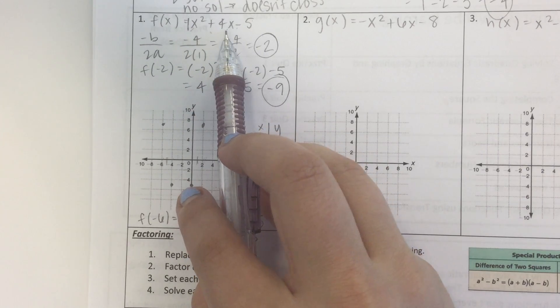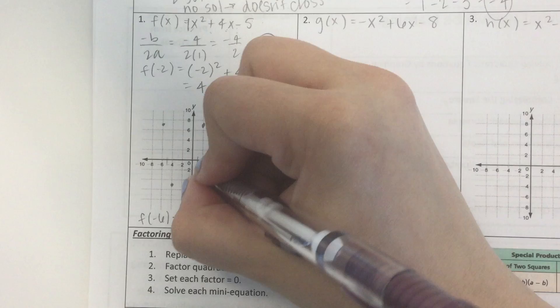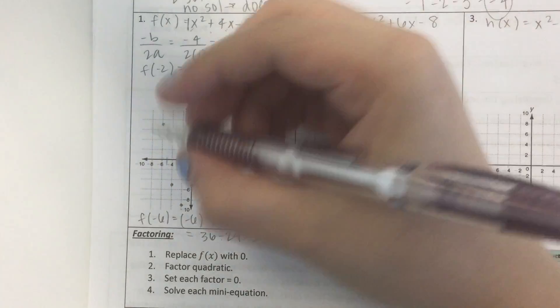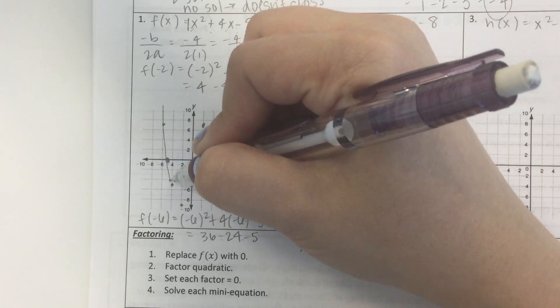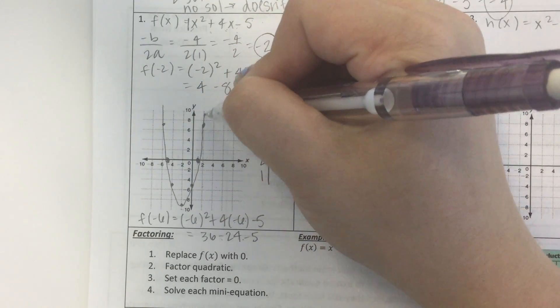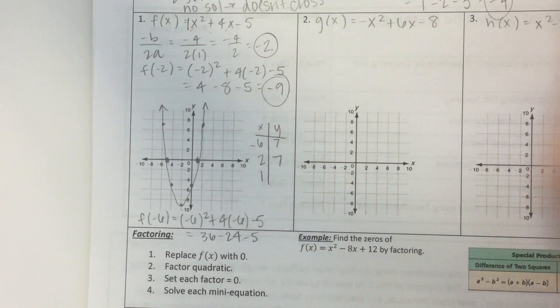Well, 1 plus 4 is 5, minus 5 is 0. Yep, there it is. And I know negative 5 is going to be the same, because it's symmetrical. Hopefully, your graph looks better than mine.